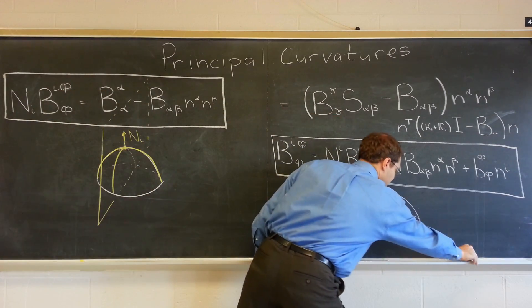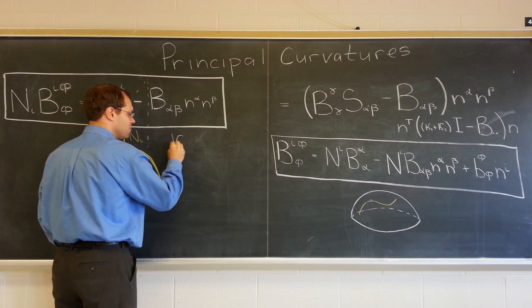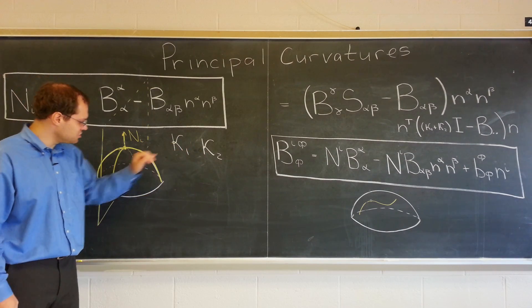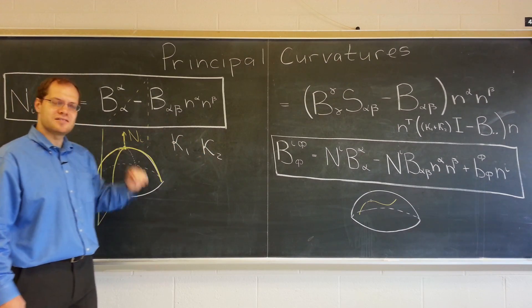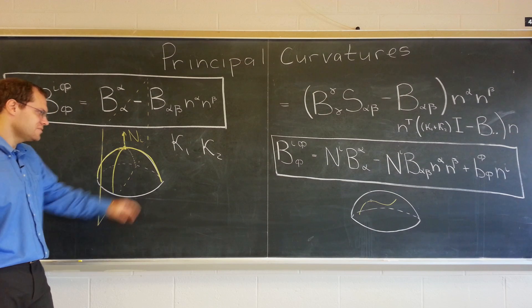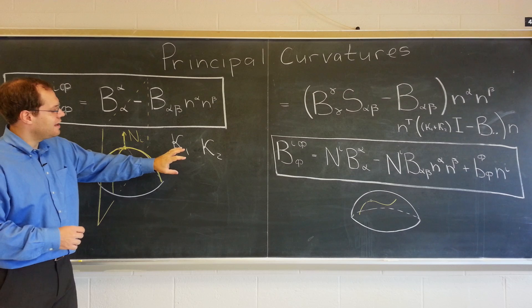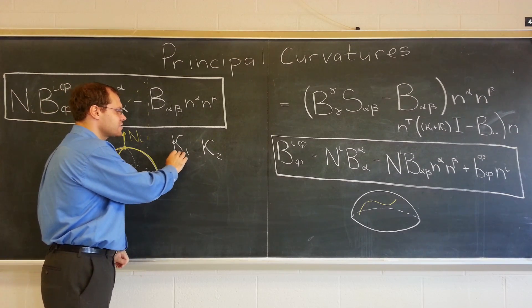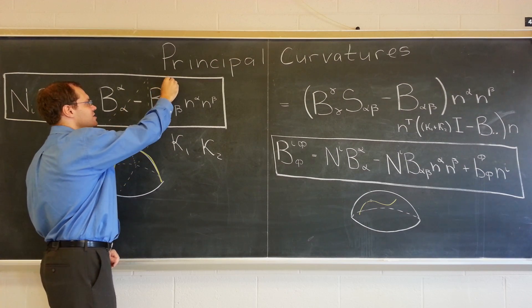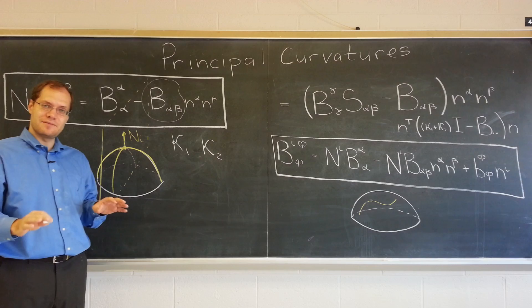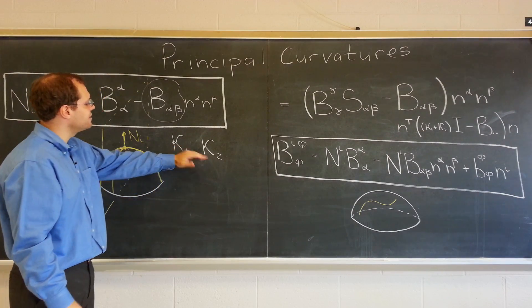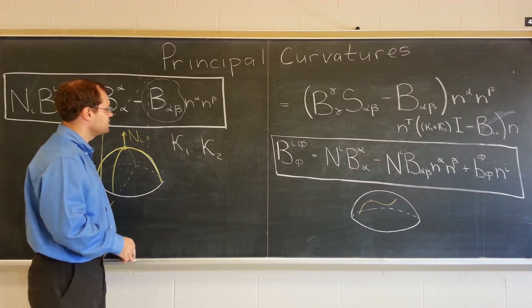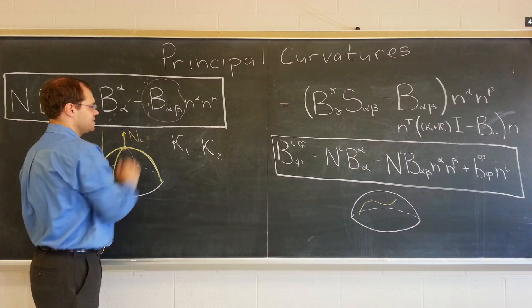Let's introduce letters for those eigenvalues — in the two-dimensional case, call them κ₁ and κ₂. That's standard notation. κ₁ and κ₂ are our principal curvatures: the largest and smallest possible attainable curvatures. Let's define κ₁ and κ₂ as the eigenvalues of this matrix — the curvature tensor — and then what I described will be a consequence. It's a symmetric matrix, because you can switch these indices.